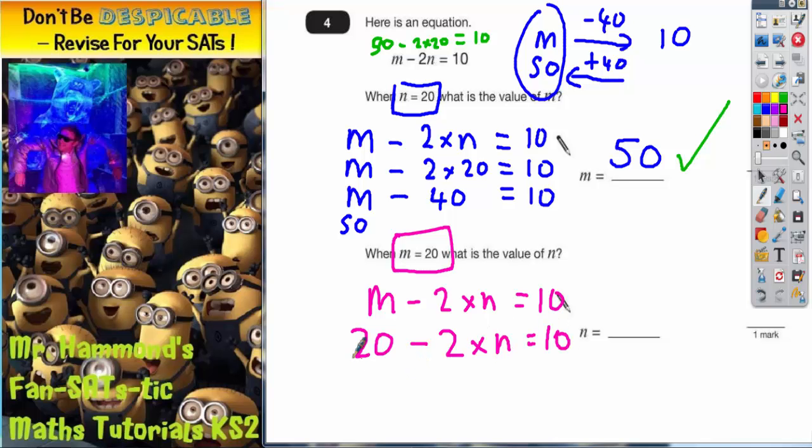If we're trying to get from 20 to 10, we've got to take 10 off. But when we're taking that 10 off, it's got to be 2 lots of a number. So what number is 10, 2 lots of? Well, 10 is 2 lots of 5, isn't it?